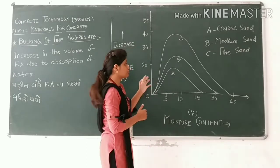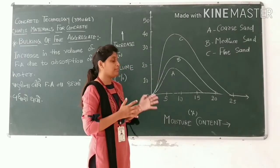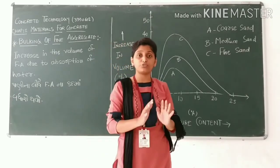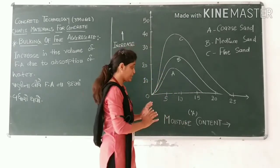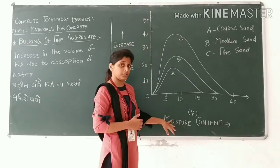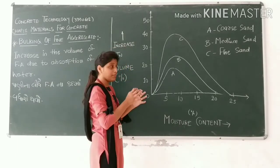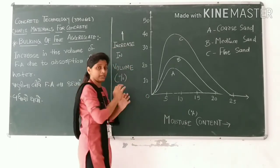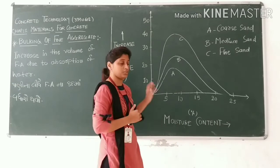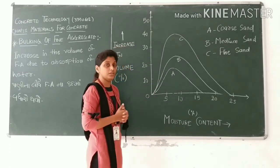This is the graph of the three types: coarse, medium, and fine sand, showing water content on the x-axis and the increase in volume on the y-axis.